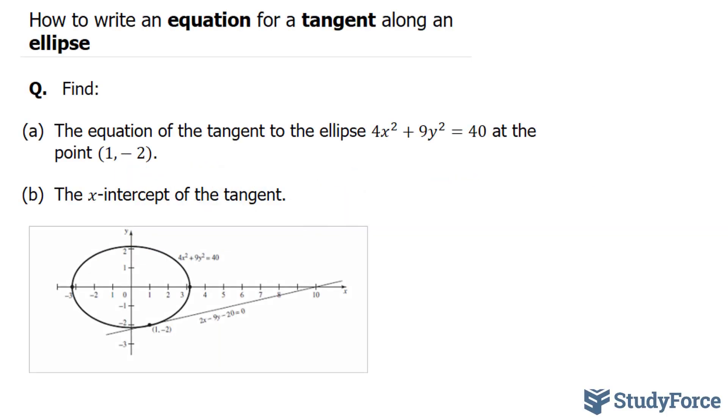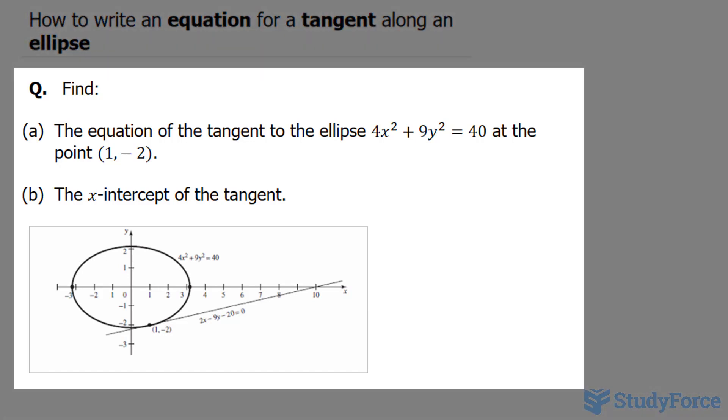In this lesson, I'll show you how to write an equation for a tangent along the ellipse. The question reads, find the equation of the tangent to the ellipse 4x squared plus 9y to the power of 2 is equal to 40 at the point 1 and negative 2.